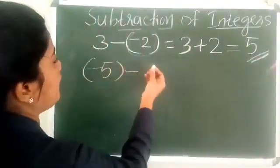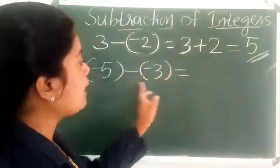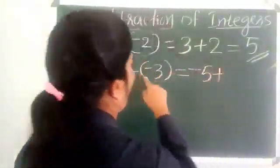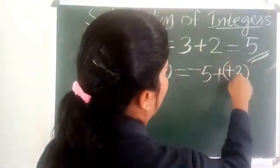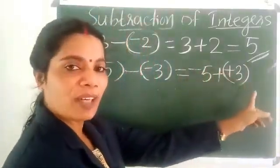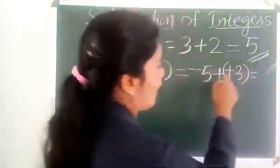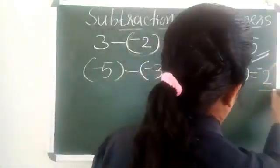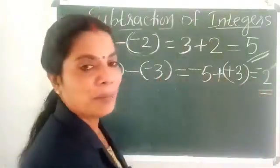Another example: minus 5 minus minus 3. Add the additive inverse of minus 3, which is positive 3. So minus 5 plus 3. To add two integers with different signs, subtract and put the sign of the greater number. 5 minus 3 equals 2, and the sign of the greater number is minus. So we get minus 2. Minus 5 minus minus 3 equals minus 2.